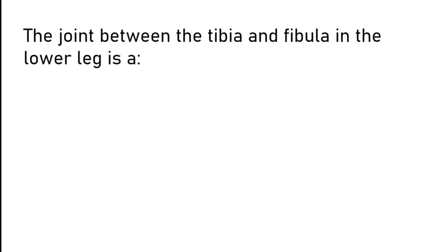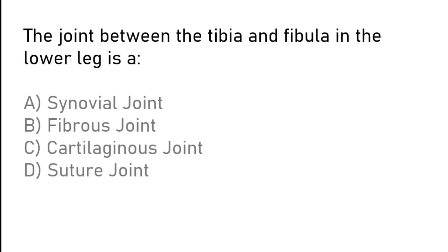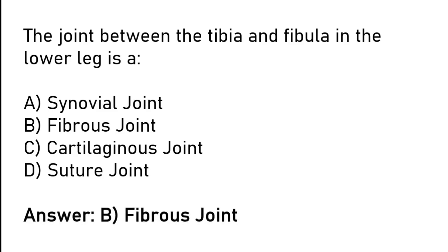The joint between the tibia and fibula in the lower leg is a: synovial joint, fibrous joint, cartilaginous joint, or suture joint. The correct answer is option B: the joint between the tibia and fibula in the lower leg is a fibrous joint.